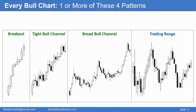Every bull chart is made up of one or more of these four patterns, and it does not matter on the timeframe, doesn't matter on the type of market, doesn't matter on the type of chart. Every chart that's going up is made up of some combination of these four patterns. Sometimes the pattern might only be a bar or two long, sometimes it may be 20 or more bars. For example, breakouts are often relatively brief, and trading ranges can last a very long time.